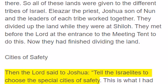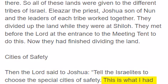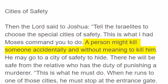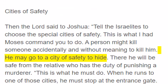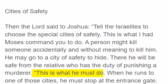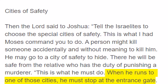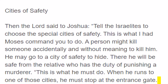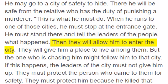Cities of safety. Then the Lord said to Joshua, Tell the Israelites to choose the special cities of safety. This is what I had Moses command you to do. A person might kill someone accidentally and without meaning to kill him. He may go to a city of safety to hide. There he will be safe from the relative who has the duty of punishing a murderer. When he runs to one of those cities, he must stop at the entrance gate.